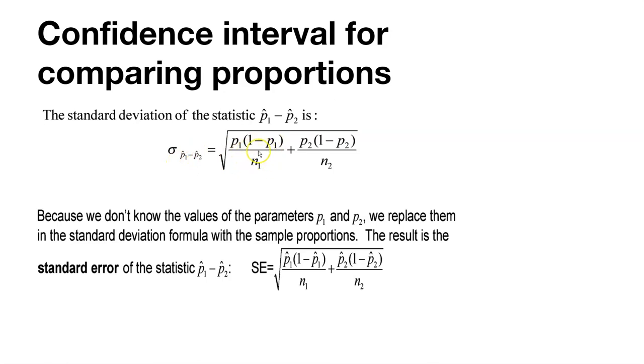We know what the parameters are for the first, we know what the parameters are for the second, we can calculate what the standard deviation of the difference is. We don't know the values of the parameters P1 and P2, so we replace them with P1 hat and P2 hat to get the standard error of those differences in those proportions.